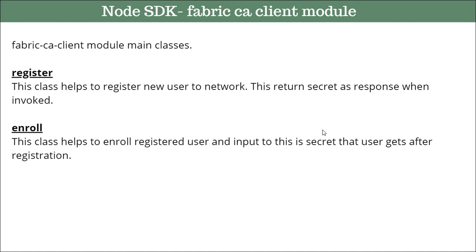Once you are registered and have the secret from the Certificate Authority, the second step is enrollment. You need to be enrolled to access the network and perform all the functions. Only a registered user can be enrolled — you cannot enroll a user that is not registered yet. For a user to access the network, they perform two steps: registration first, then enrollment. The input for enrollment is the secret received from the registration step.